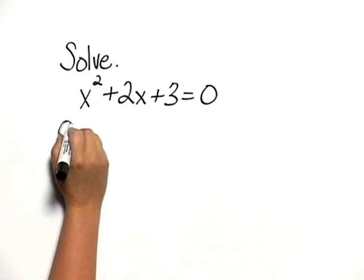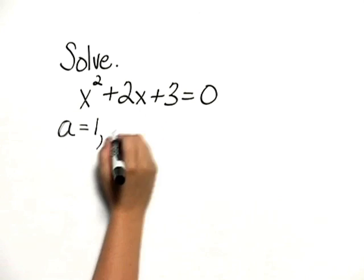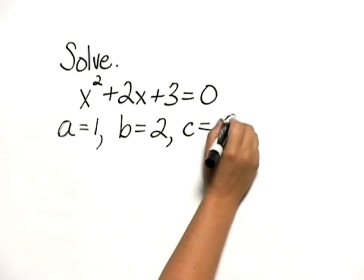We'll let a equal 1, since that's the coefficient of the x squared term. b is 2, and c would then be 3.